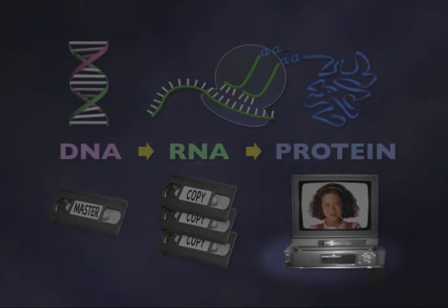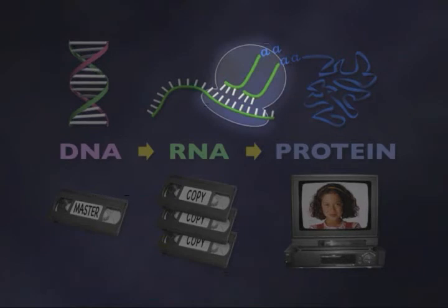Then you need some kind of a machine to plug the videotape into, and that's a VCR machine, which is analogous to the cell's ribosome, which is its protein synthetic machinery, where the amino acids are lined up with the triplet codons along the RNA using this transfer RNA intermediary.